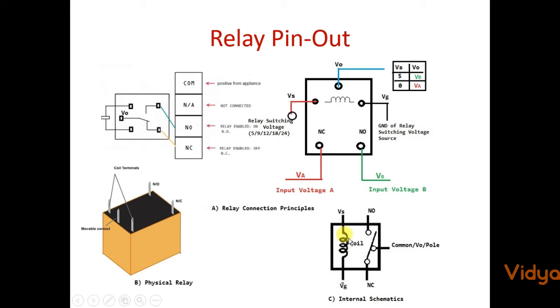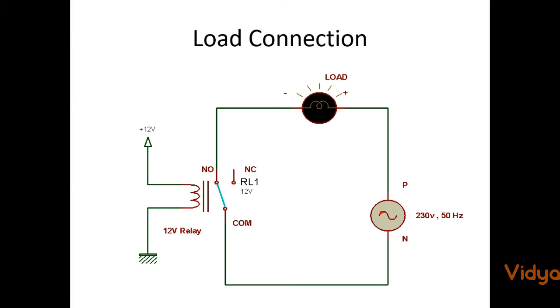Because of this charge in the electric coil, it gets magnetized. Because of this magnetism, this common point which is residing on NC gets shifted towards NO. It works against a spring tension.